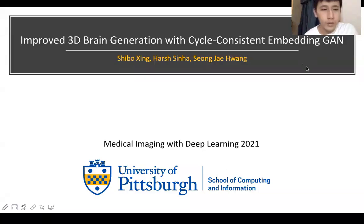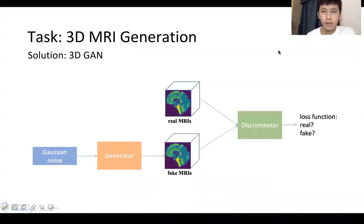Hello everybody. Let me introduce our novel model recently accepted by MICCAI, and it is called the Cycle Consistent Embedded Generative Adversarial Network. Our model addresses the problem of generating 3D MRI images from random noise. There have been a number of ways to tackle this problem. A notable one is 3D GAN.